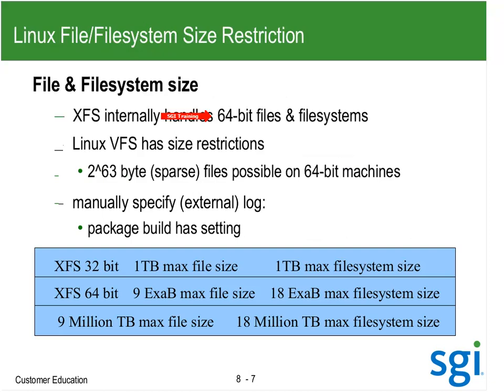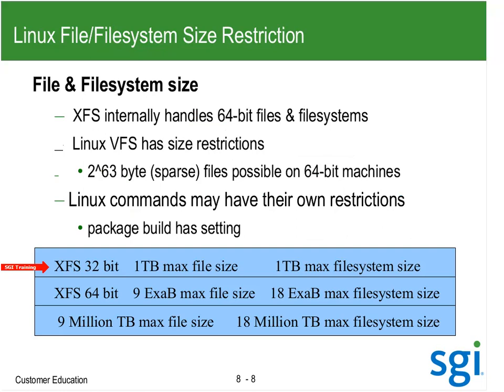With a 32-bit file system I get a maximum of roughly a terabyte file size and terabyte file system. 64-bit gets me to a 9-exabyte file — basically 9 million terabytes — or an 18-exabyte file system, which is 18 million terabytes.